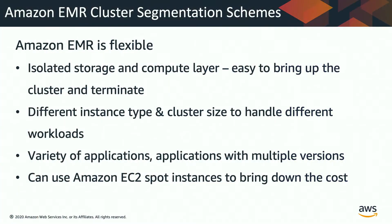Before we talk about Cluster Segmentation Schemes, we need to know why we can do that. The main benefit of Amazon EMR is it's very flexible. You can isolate your storage and compute layer — in EMR, the storage layer and compute layer don't have to be tied together. You can easily scale up storage or compute independently. In Amazon EMR, you can use different instance types and cluster sizes to handle different workloads, and you don't have to stick with a fixed number of nodes.